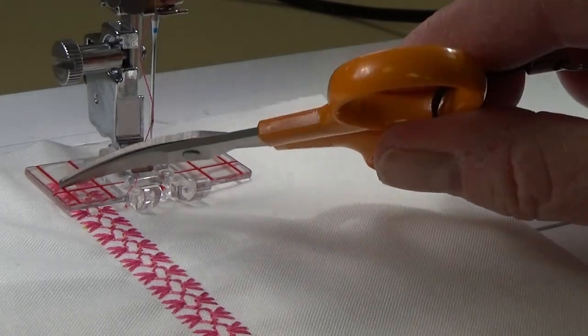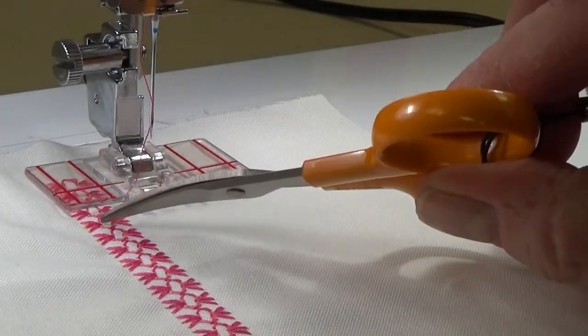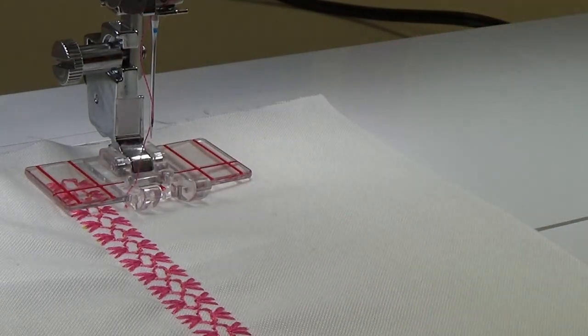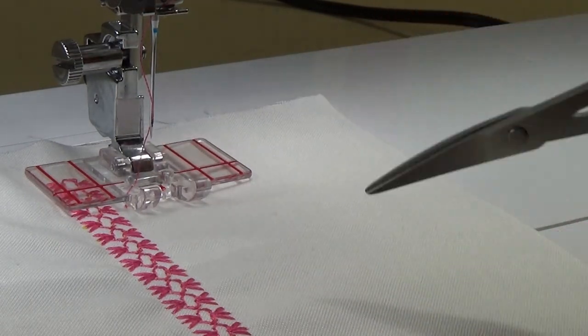You notice that it has some guides on it so if I had one row of stitching I can line it up with one of these guides so I don't have to put marks all over my fabric.